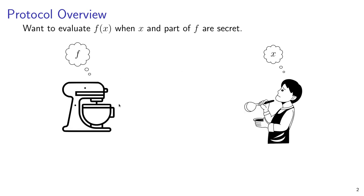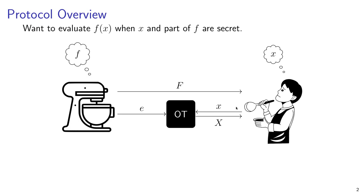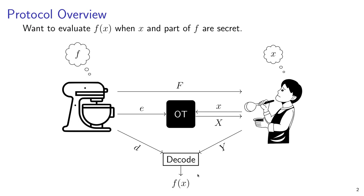These two parties are called the garbler and the evaluator. The garbler mixes up the function f to make the garbled function, and then gives it to the evaluator for evaluation. They also use oblivious transfer to give the evaluator its encoded inputs capital X. The evaluator runs the garbled circuits to get garbled outputs Y, which are then decoded to get the output of the function.